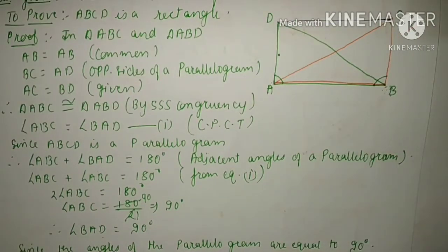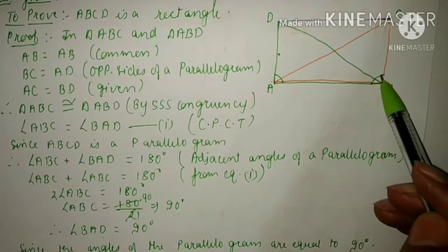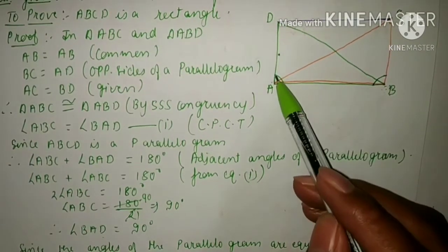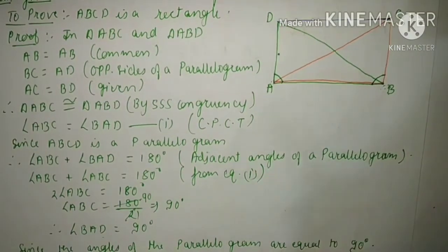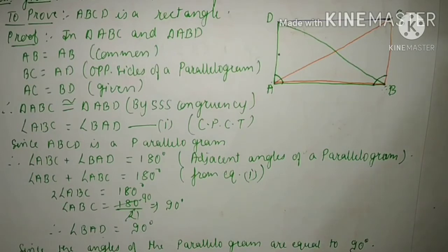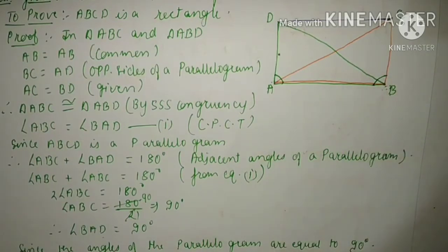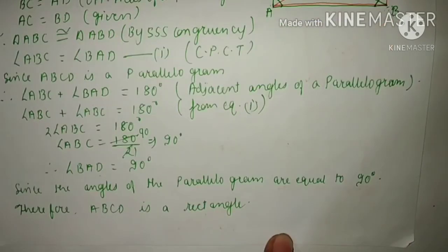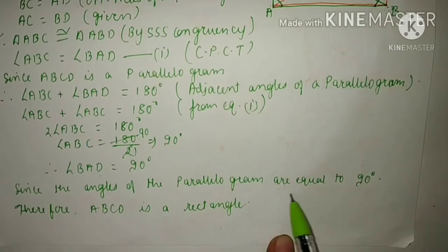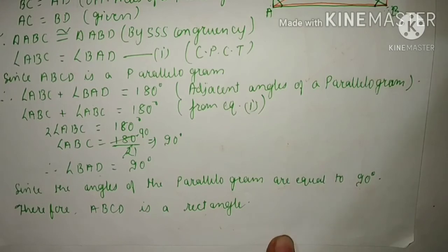Now we have proved that angle ABC is equal to 90 degrees and angle BAD is also equal to 90 degrees. Since a parallelogram whose angles are equal to 90 degrees is a rectangle, we can write: since the angles of the parallelogram equal 90 degrees, therefore ABCD is a rectangle. Hence proved.